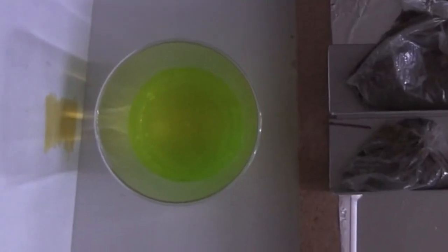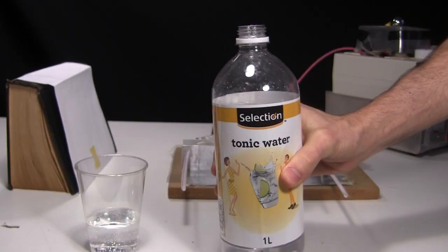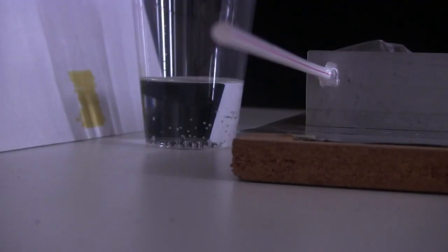When the ultraviolet light passes through, some of it is absorbed and then re-emitted as green visible light. I tried tonic water. That worked and re-emitted as a blue light.